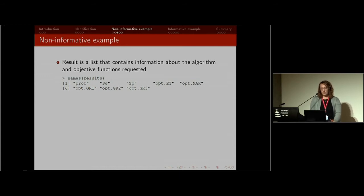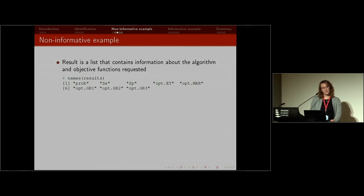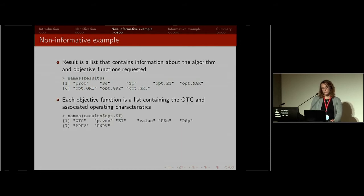The result is a list containing information about the algorithm and the objective functions requested: the probability, sensitivity, and specificity you input, and a number of opt objects containing further information about the optimal testing configuration based on each objective function.